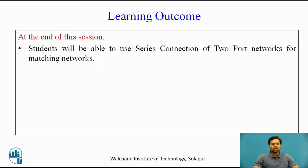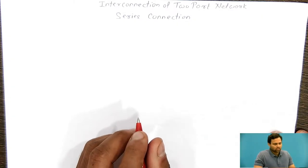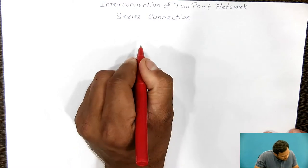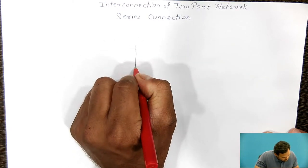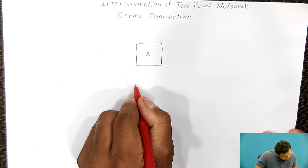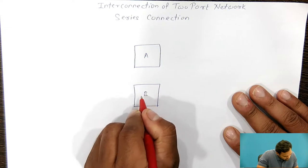Now we will see how two-port networks are connected in series and what are the equivalent values of particular variables that we can find by deriving them. First, we will draw the series connection of two networks. The first network is represented by letter A and the second two-port network by letter B.